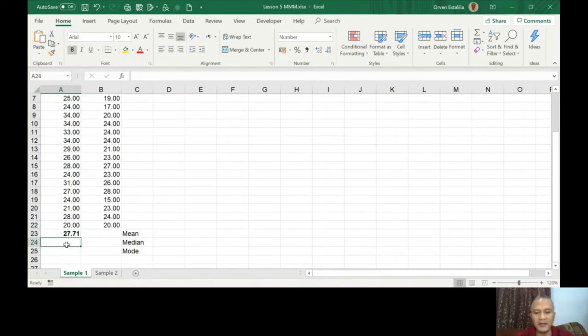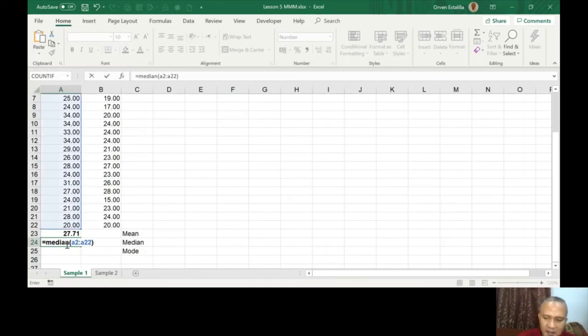The next is median. This one, we have a function called median. So again, it's just the same A2 to A22, close parenthesis, you're going to get the answer. So again, the idea of median is the central tendency. He will arrange first the numbers and he will get the central position and whatever number is in there.